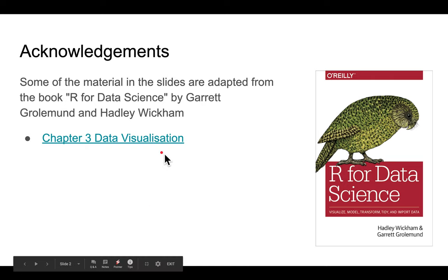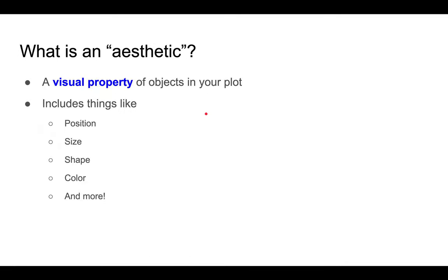So what is an aesthetic? Basically, an aesthetic is a visual property of objects in your plot. It includes things such as the position, size, shape, color, and other aesthetics that we might not cover in this video lecture.